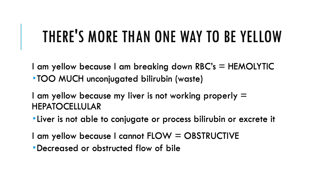If the liver itself isn't working and there's a problem within the liver cell, then it's hepatocellular — makes sense, right? The liver's not functioning, so it's not able to conjugate the bilirubin, process it, or excrete it, leading to too much. And then there's obstructive jaundice, where there's a problem with bile flow — usually a problem in the bile duct with decreased or completely obstructed flow, causing backup and excess unconjugated bilirubin, making the person yellow.